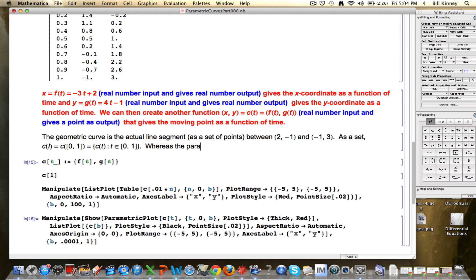Whereas the parametric curve represents the motion. The geometric curve has no motion information. It's just where was the person over time. The parametric curve represents the motion, both direction and speed information. Basically, what that means is it's c itself.